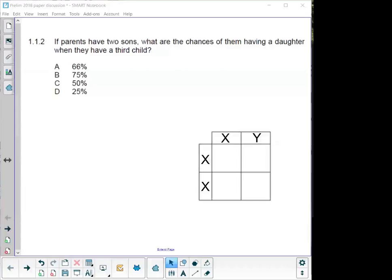Okay, first question that I looked at, which is on your screens now, is question 1.1.2. So it says, if parents have two sons, what are the chances of them having a daughter when they have a third child?